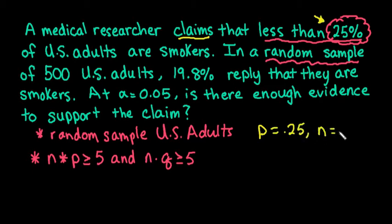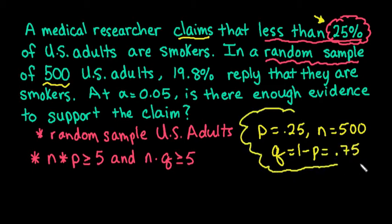N is our sample size, so it tells us that we have 500. And then to find Q, we have to do 1 minus P. So we would end up with 0.75. And we will use these again later when we are calculating the standardized test statistic.